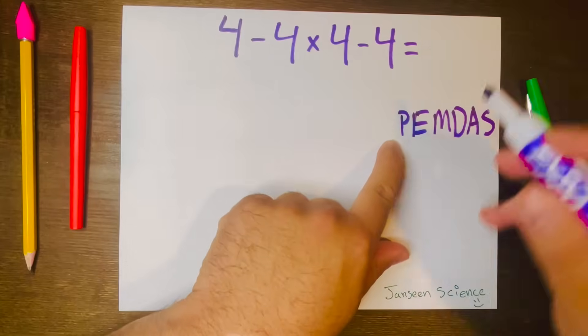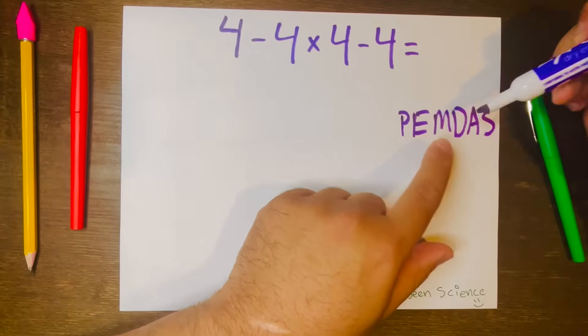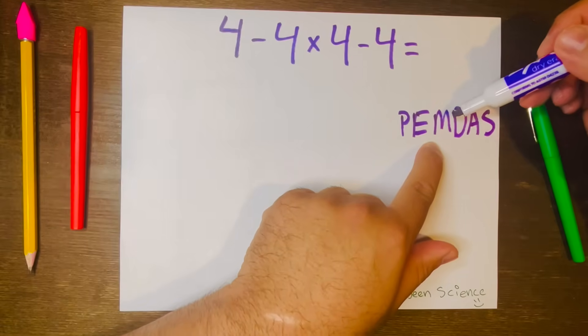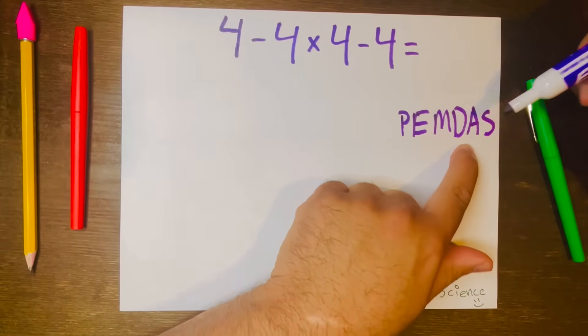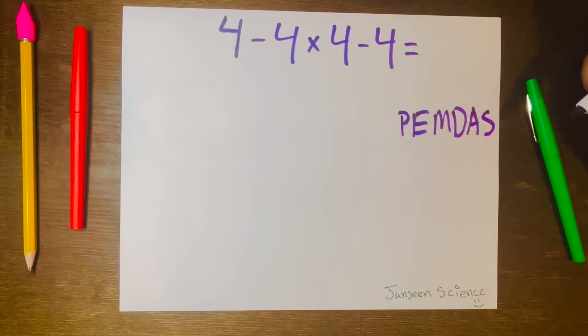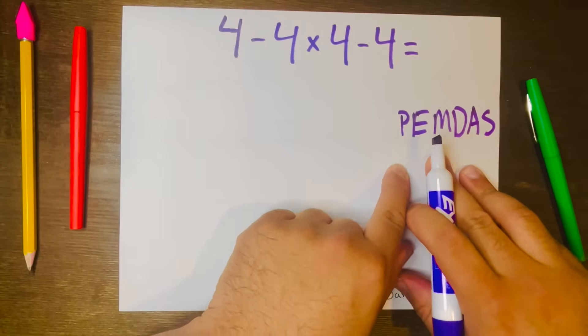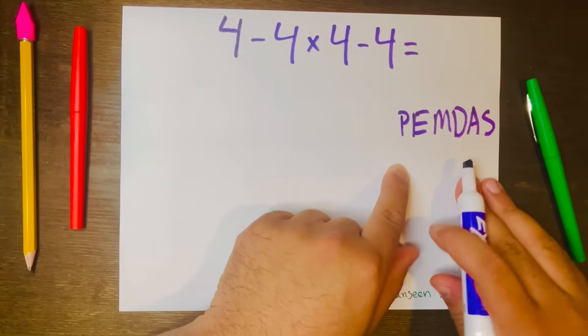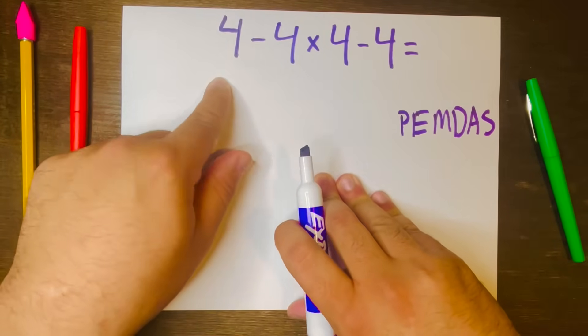P stands for parentheses, E stands for exponents, M stands for multiplication, D division, A addition, and lastly S for subtraction. And we work from left to right in this order. Let's go ahead and use the order of operation to solve this problem.